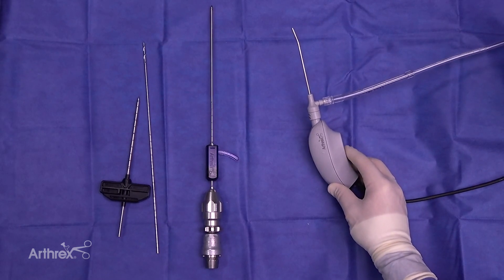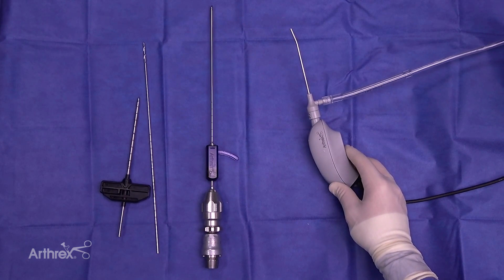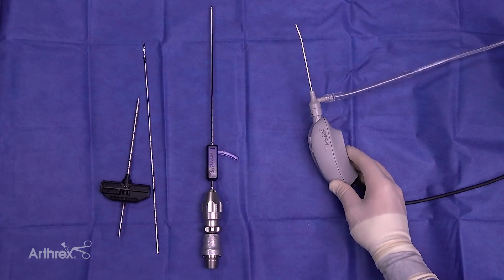We also want to highlight here that if you are working very close to the articular surface, it never hurts to have an arthroscope nearby so that you can look and make sure that you have not violated the articular surface. So this can be a nice double check and we'll do that for demonstration purposes for this.